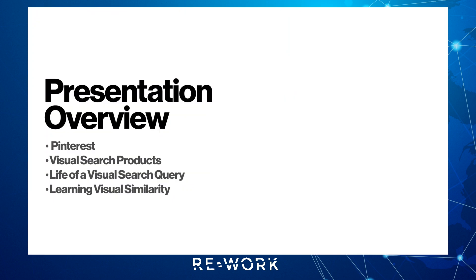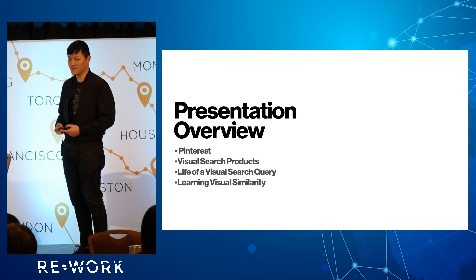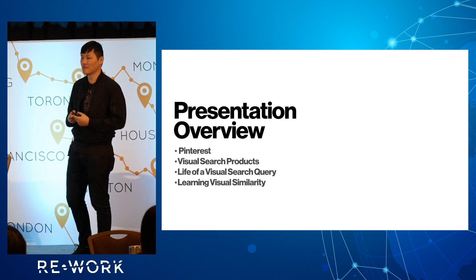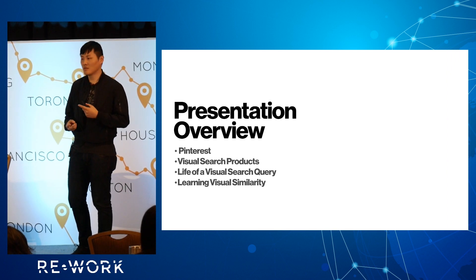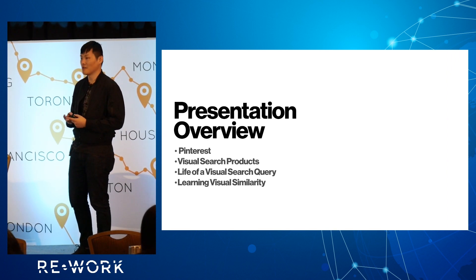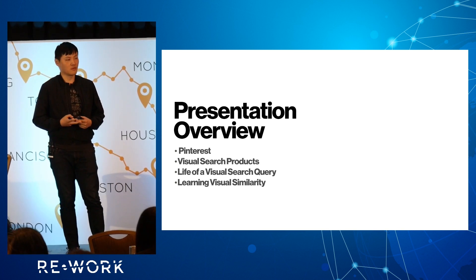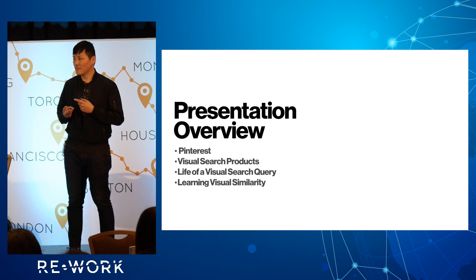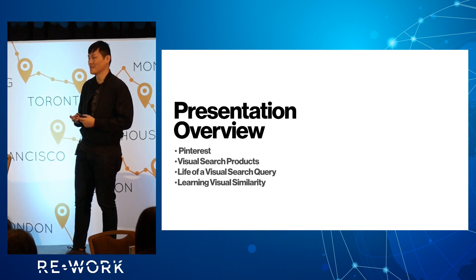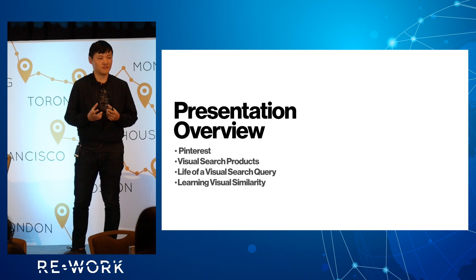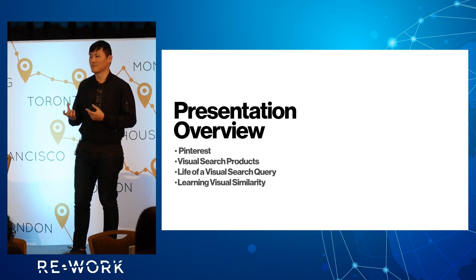The presentation overview is that I'm going to talk about Pinterest very briefly — what do people use Pinterest for and where does visual search have a role. Then I'm going to talk about the different products that we've built, then go into the architecture of the entire system, how the actual retrieval and overall architecture works. And finally I'm going to focus in on the core part of visual search, which is how do you use deep learning to learn visual similarity.